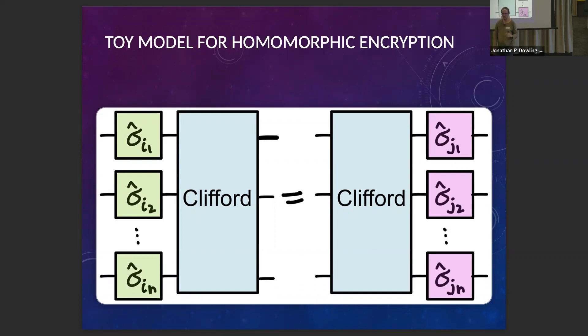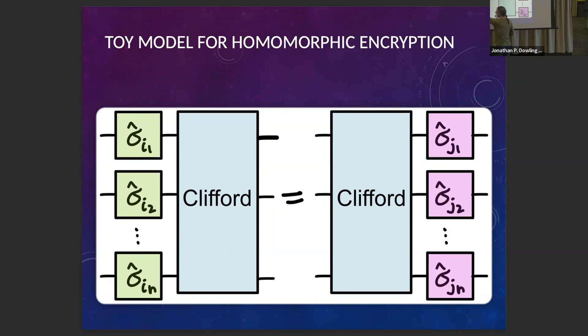Clifford circuits can be efficiently classically simulated, so they're not interesting from a quantum advantage perspective. But you can add T gates to Clifford operations to become universal. To implement a T gate without violating the homomorphic construction, we use magic state injection: inject magic states and use teleportation to effectively teleport the action of a T gate. We add extra lines with all the T gates we need as magic states, and all of this remains Clifford because the teleportation circuitry is Clifford too. So we remain consistent with the encryption scheme while achieving universality, with information-theoretic security.